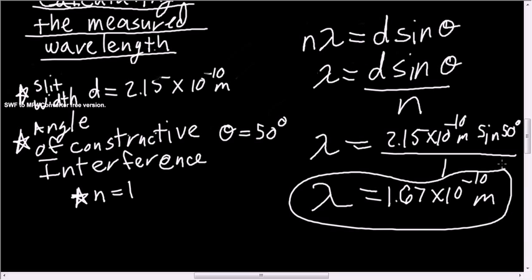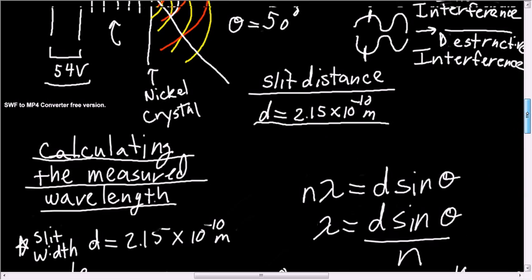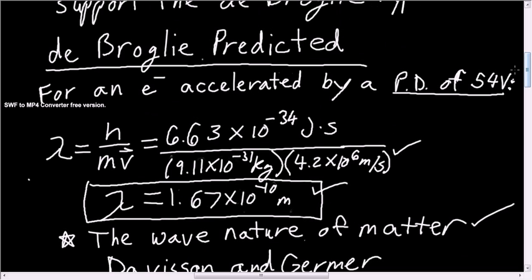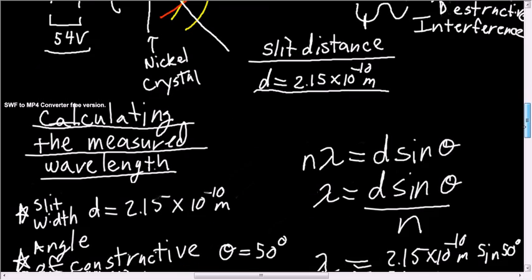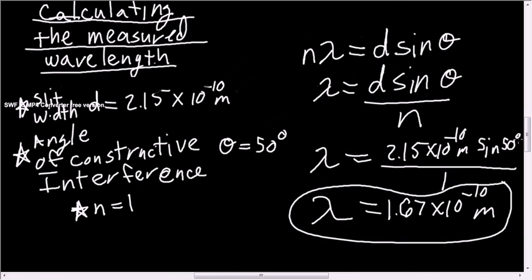So this number is exactly the same as was predicted by the de Broglie prediction. So this supported the idea that the de Broglie equation was correct and that electrons were both a particle and a wave.